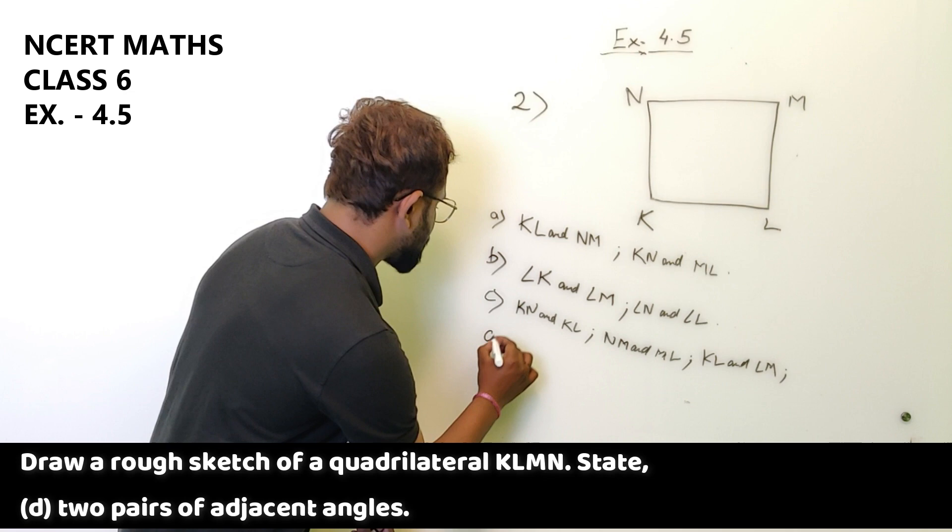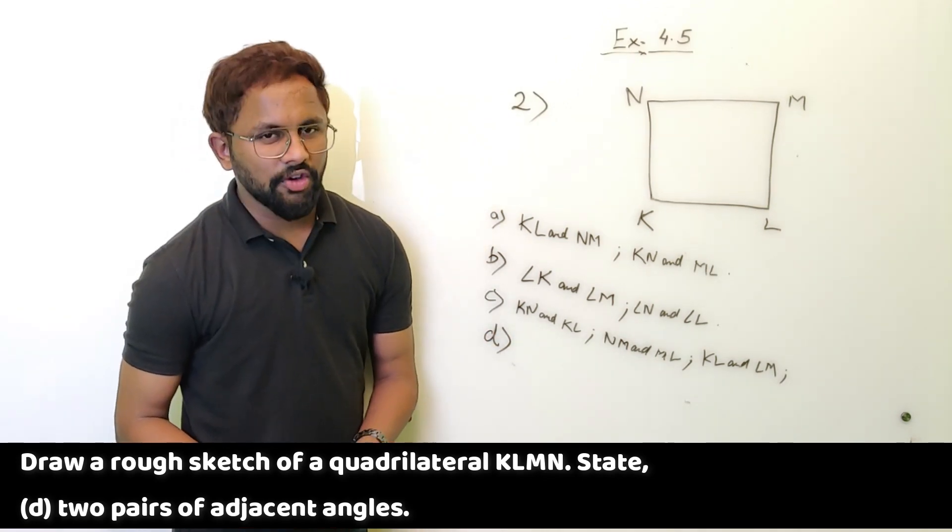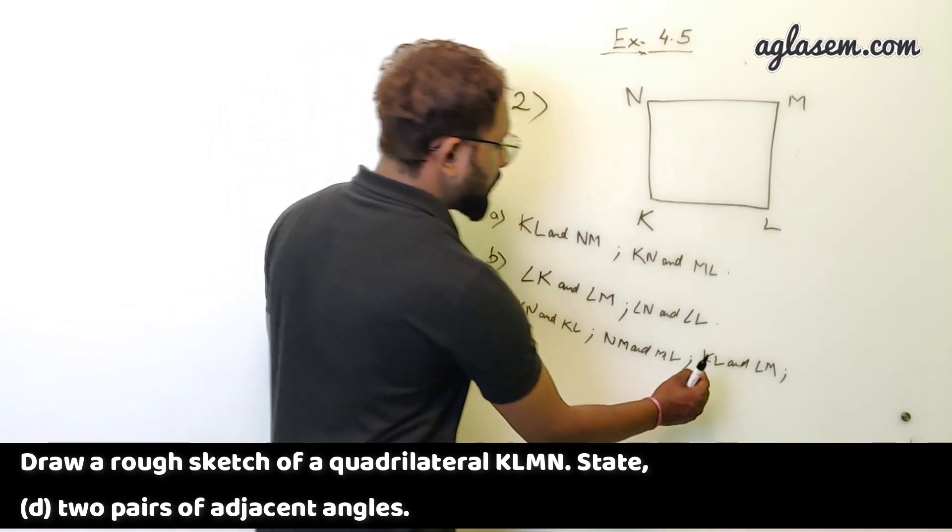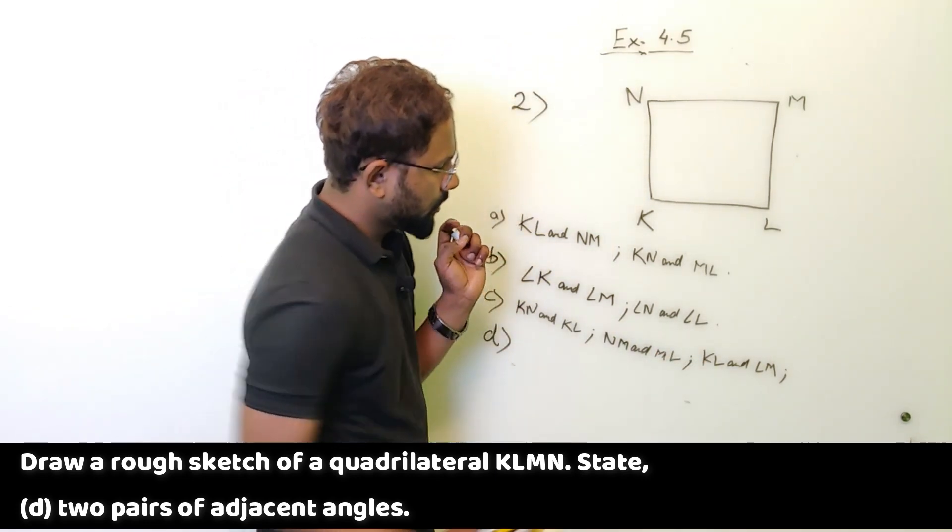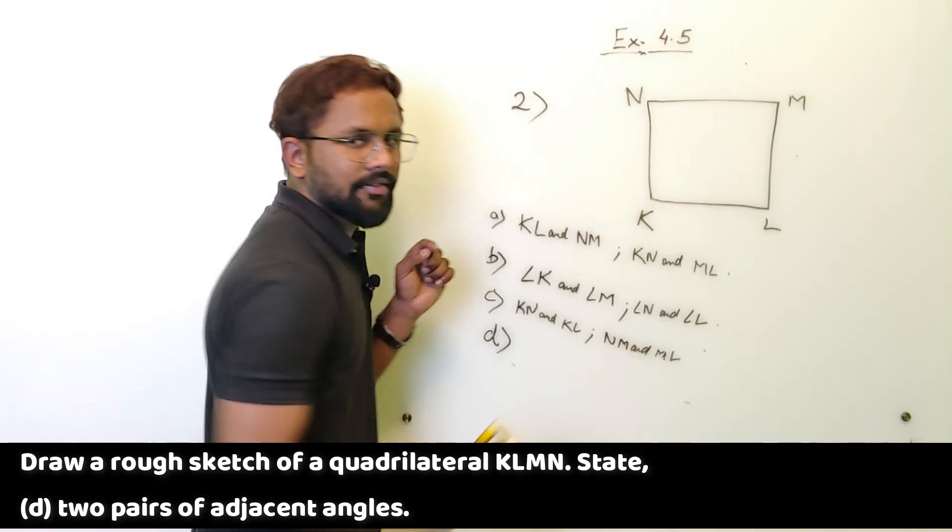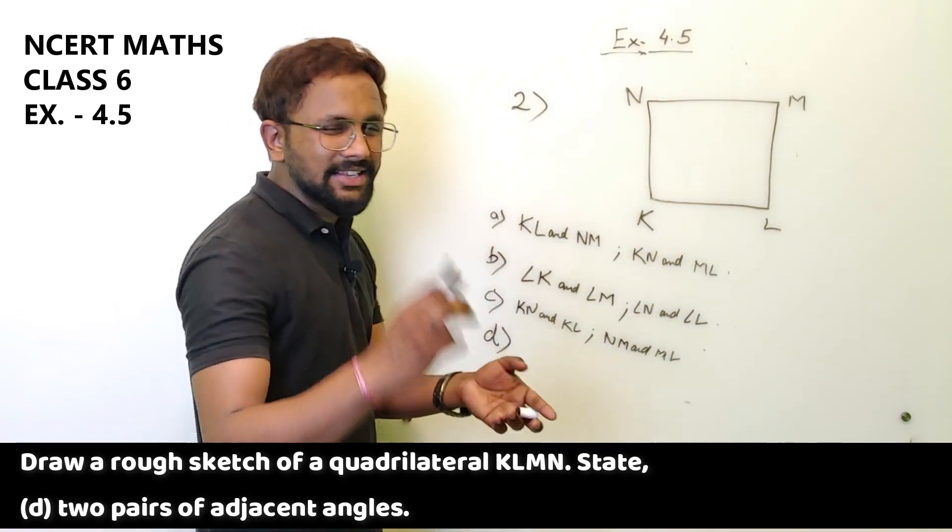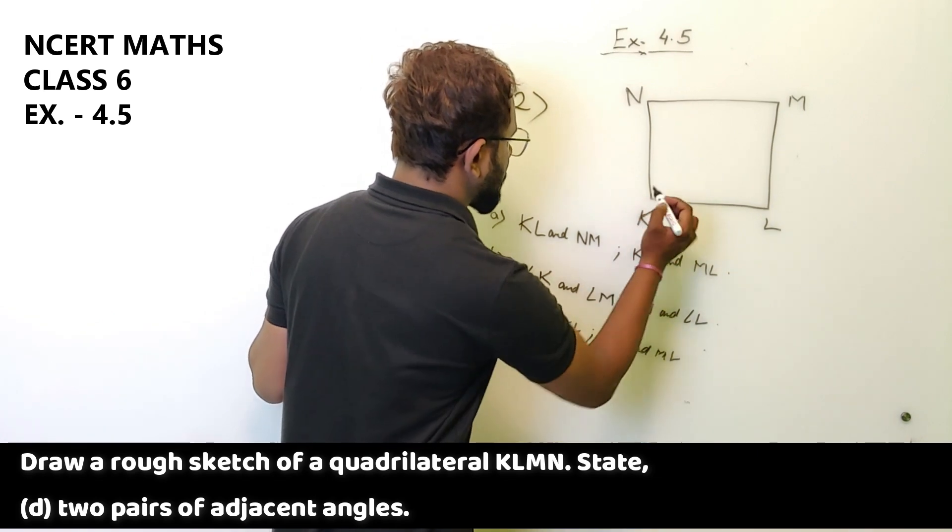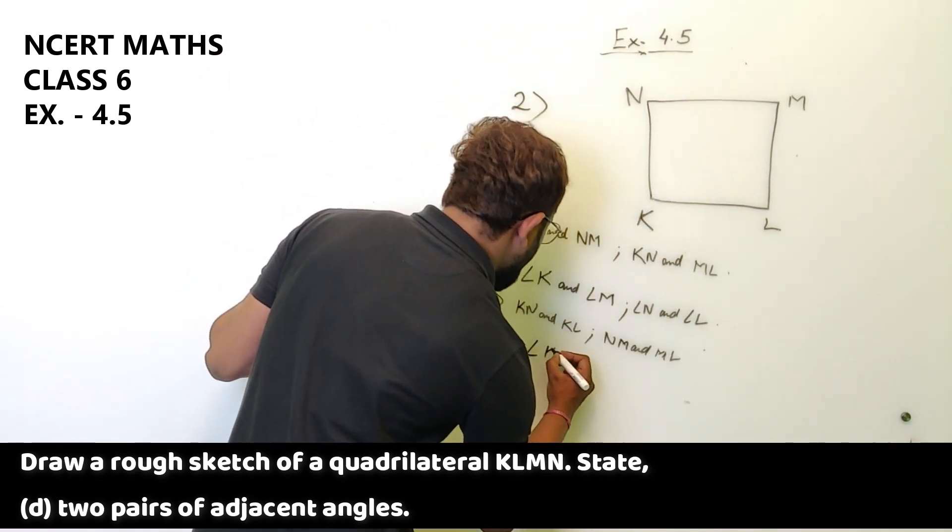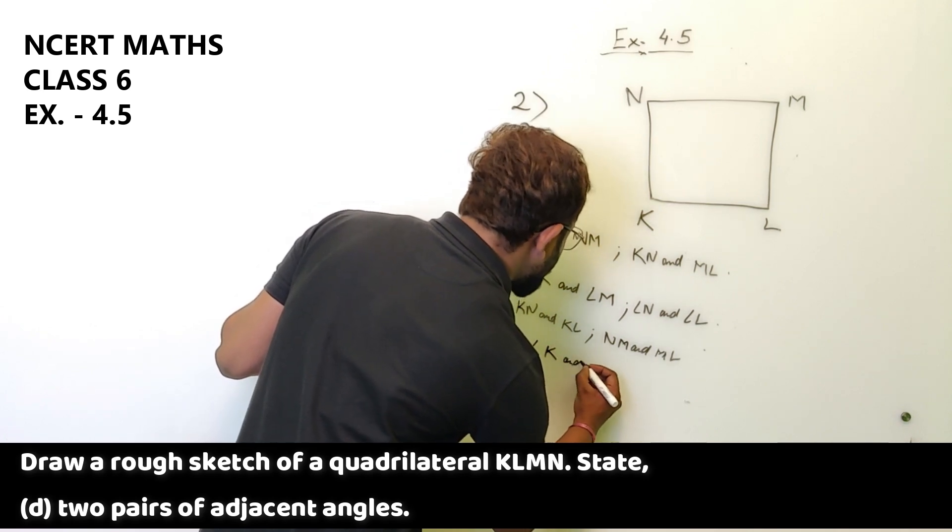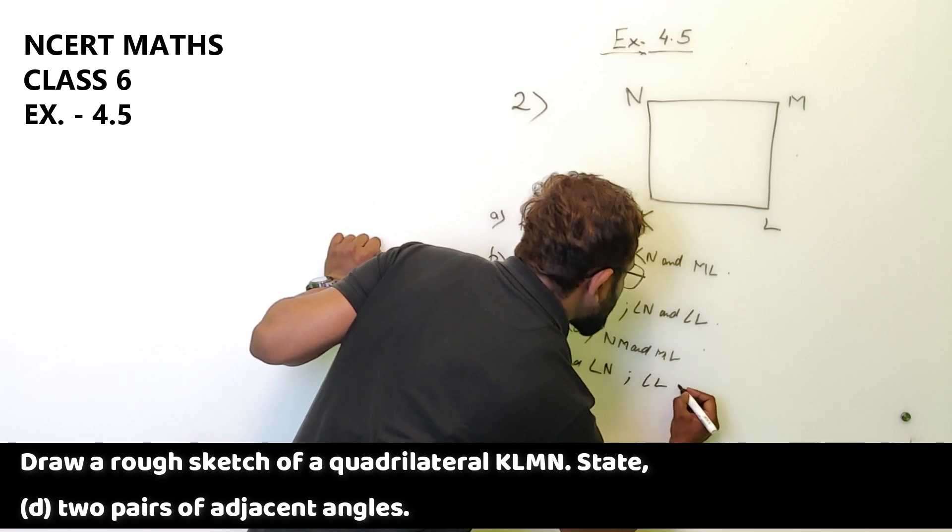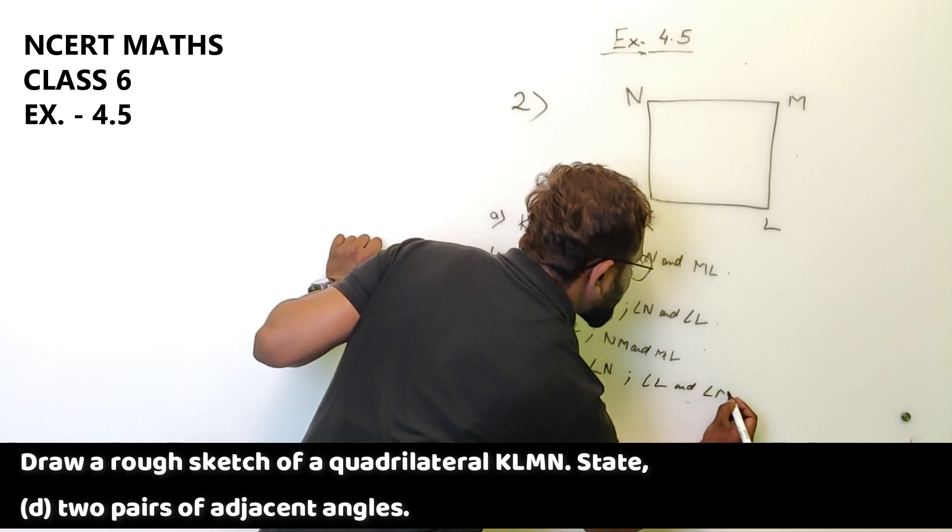D part, two pairs of adjacent angles. We have to write two pairs now. So here you can actually remove this two. So your answer can be this. I have written one more just for the ease of your understanding. Two pairs of adjacent angles. So angle K and angle N, and angle L and angle M. So these are the two pairs of adjacent angles.